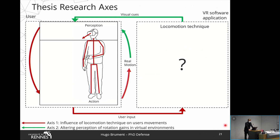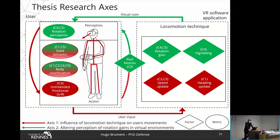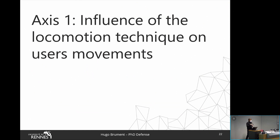In order to understand the impact of locomotion techniques on users' perception and action, we focused on two research axes: the first on the influence of locomotion techniques on users' movement, and the second on how we could alter the perception of rotation gains in virtual environments. We identified factors — represented by diamonds in the figures — and metrics to assess those factors related to users' behavior. Overall, we made five contributions investigating how these factors related to locomotion techniques could influence the perception-action loop.